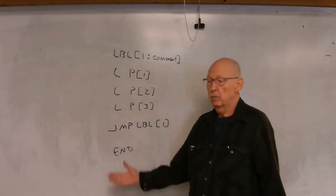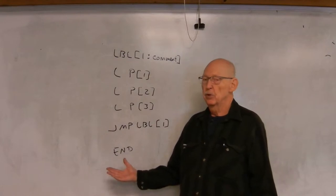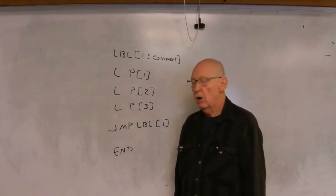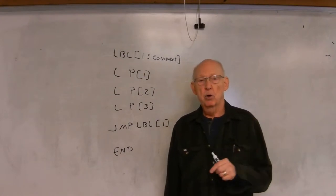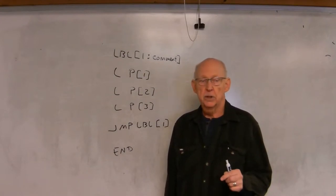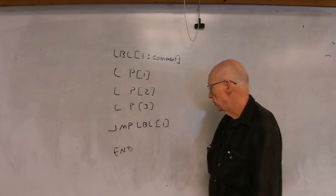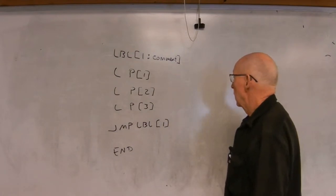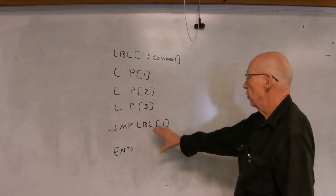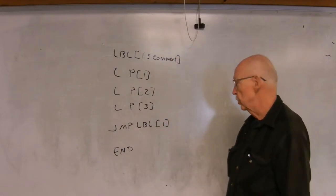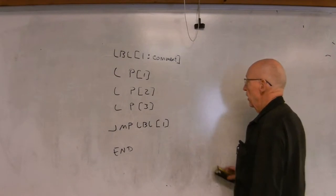Now you really wouldn't do it this way, but this is just an example. To halt the program you'd have to press the hold button on the teach pendant and then do a function abort all. So this is one type of unconditional branch.